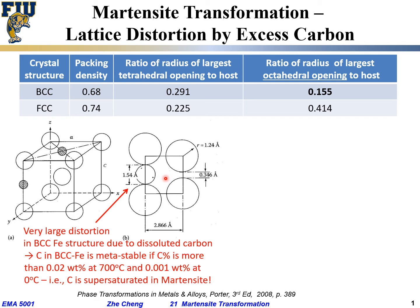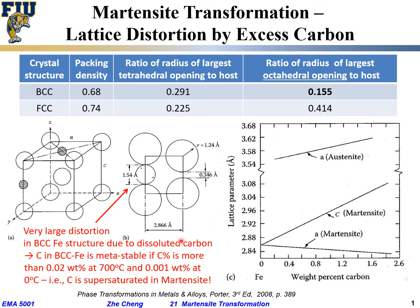Under equilibrium conditions, the carbon bonds with iron to form Fe₃C — the so-called cementite. But if we don't give it enough time, like during quenching, we don't allow the carbon atoms to diffuse and rearrange to form iron carbide. Instead, we freeze in the carbon at whatever location it occupies, randomly distributed within the initial FCC structure, and the entire structure transforms from FCC into the so-called BCT structure.